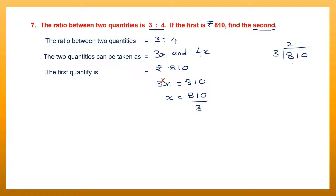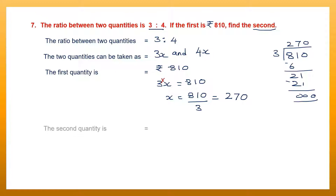Let's divide 810 by 3. 3 into 8 goes twice with remainder 2, bring down 1, 3 sevens are 21. So it is 270. Now I found the value of x to be 270.